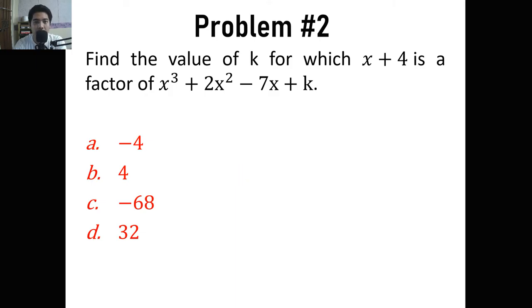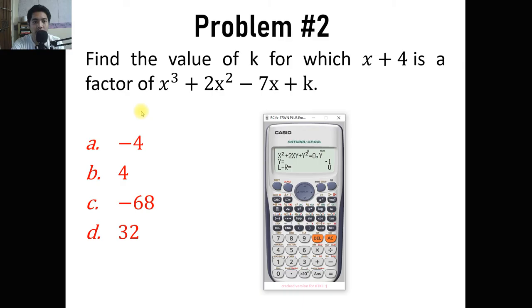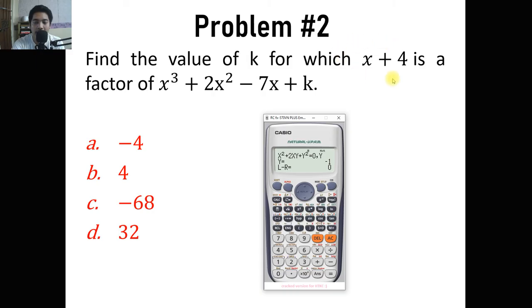For problem number two: find the value of k for which x plus 4 is a factor of x cubed plus 2x squared minus 7x plus k. The value we are asked to find is k. The problem says x plus 4 is a factor of this expression, so if we divide this expression by x plus 4, by the remainder theorem, the remainder should be equal to zero.